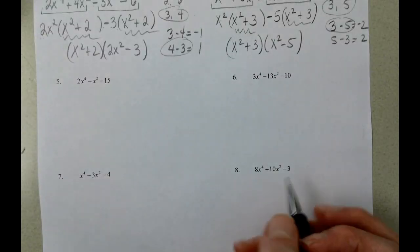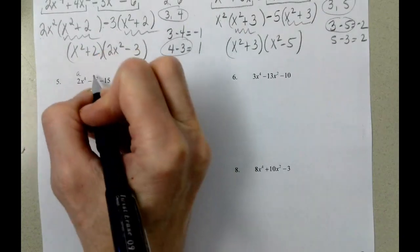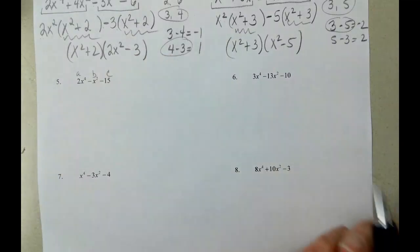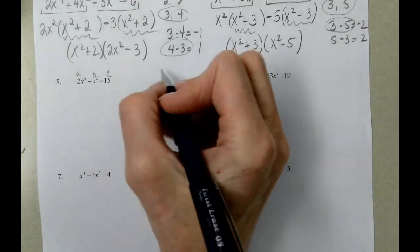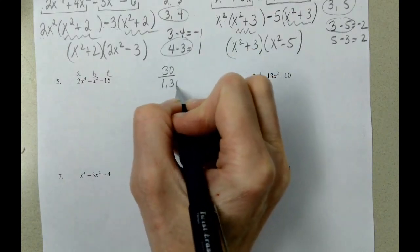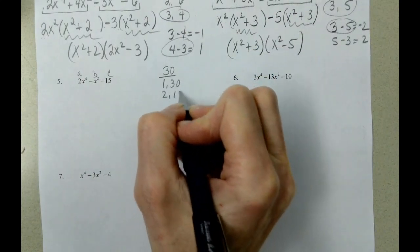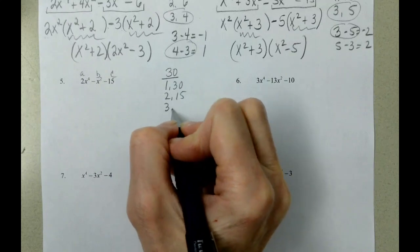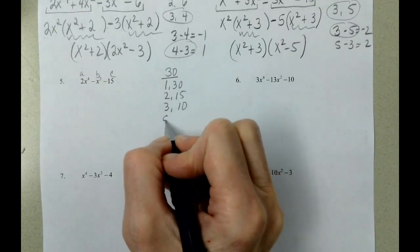We are still factoring completely. Here's A, here's B, here's C. 2 times 15 is 30. The factor pairs are 1 times 30, 2 times 15, 3 times 10, and 5 times 6.